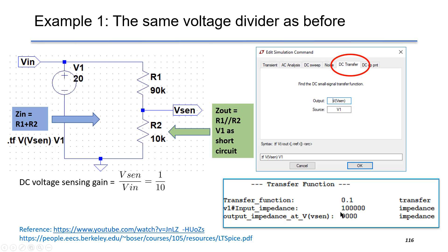which gives the transfer function as 0.1. This is the DC gain of the voltage divider. Also, the input impedance is found as 100 kOhm,